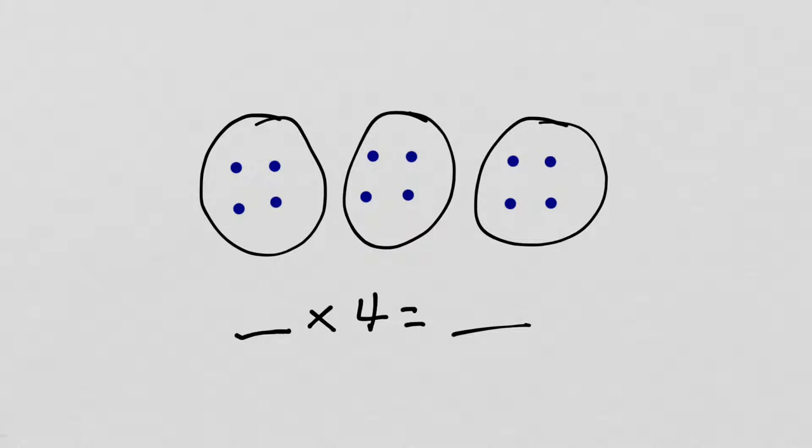This is a pretty normal situation. I've drawn three groups with four in each, so we would represent that as, or write that as the equation 3 times 4 equals, well, if I count them all up, I see that there are 12. 3 times 4 equals 12.